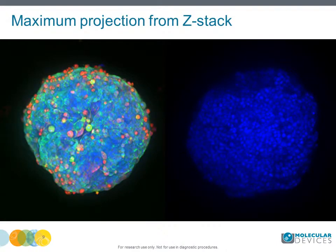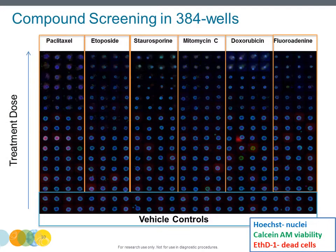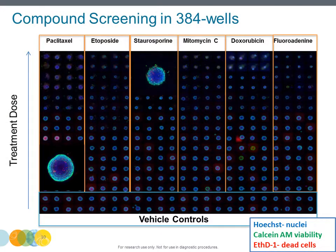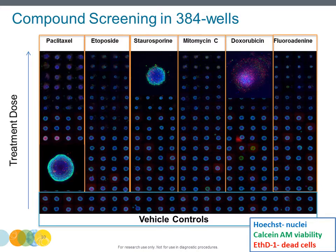Images can be analyzed individually in 3D mode, or the stack of images can be compressed into a 2D image using maximum projection. The assay is reproducible, providing consistency of spheroid size and cell number, typically less than 10% variation.